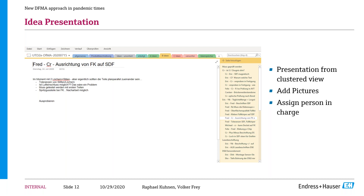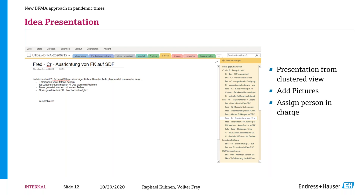Participants generally use the OneNote as a working document because it's available all the time in their digital workplace. They don't have to do their own separate documentation — if they get answers to questions they can immediately add them to the page. As it turns out, they like doing this because everything is in one place. When we jump into checkups a couple of weeks later, those idea pages are filled with more information, solutions, and new ideas.